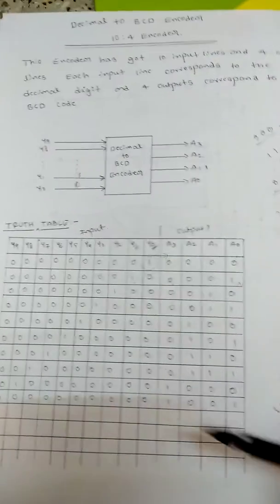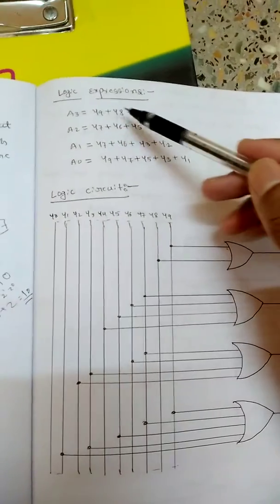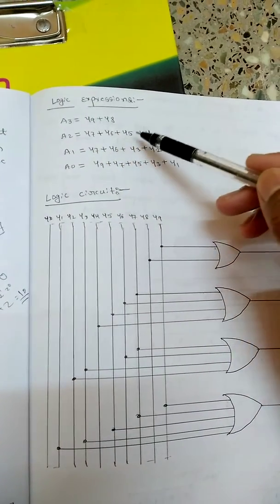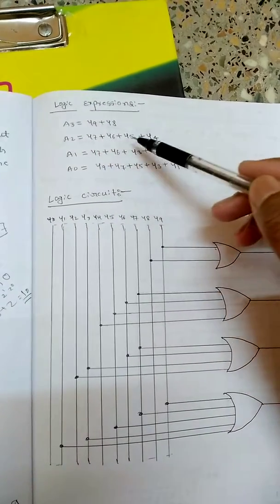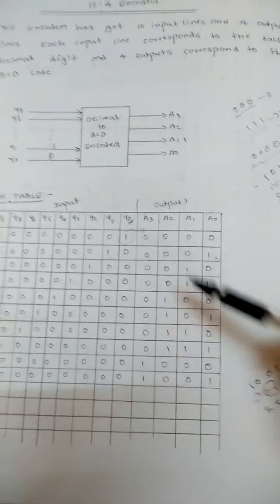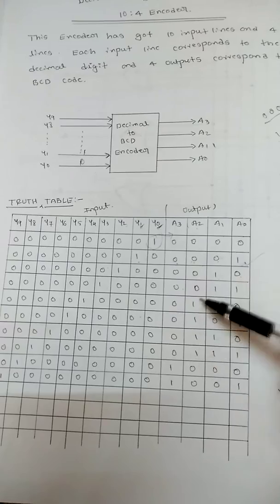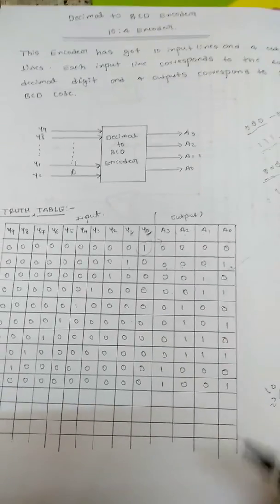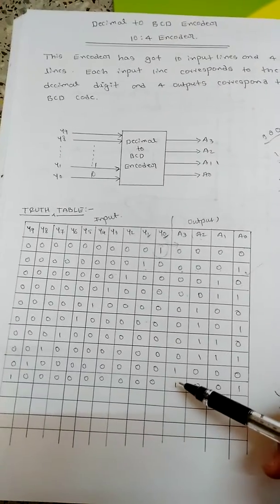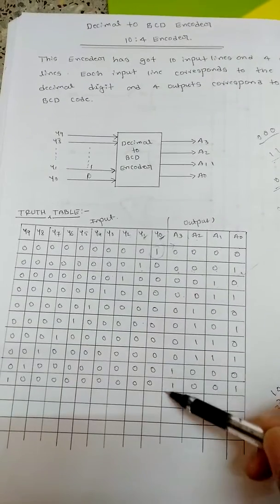These are the two values, so that's why a3 contains y9 and y8. Similarly for a2, y7, y6, y5, that is 7, 6, 5, 4. So for a2 this is 7, 6, 5, 4, these are the values which are high. What we will be doing is we will find the numbers which are high at the output.